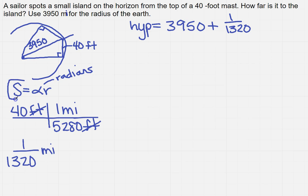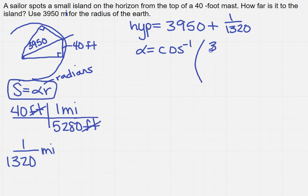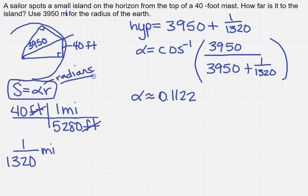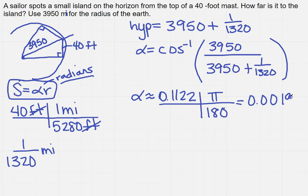I've got to find what alpha is to use it in the arc length equation. Alpha is going to equal the inverse cosine of 3,950 over the hypotenuse — that's 3,950 plus 1 over 1,320. We're comparing the two triangles. When I do that calculation, I get that alpha is approximately 0.1122. But that's not in radians, so we need to convert: multiply by pi over 180, and I get 0.00196.